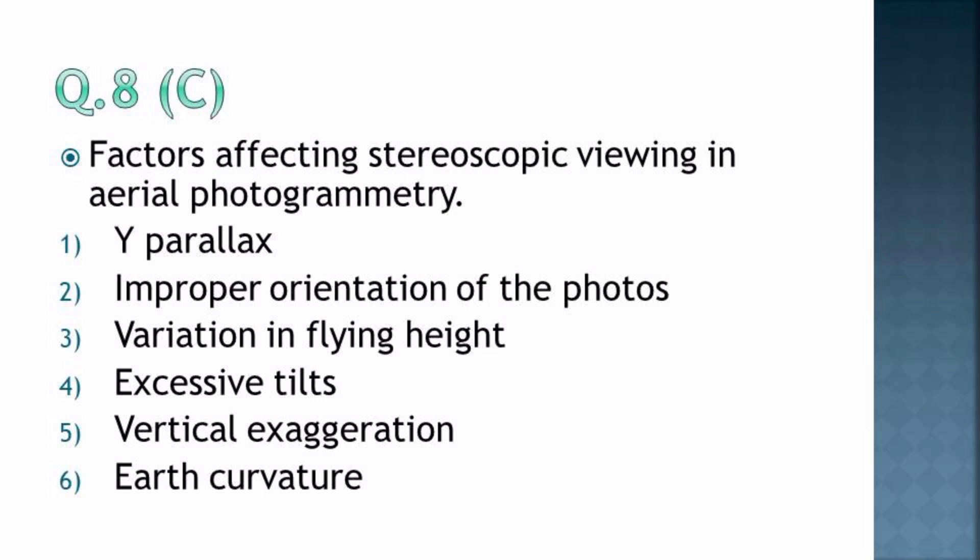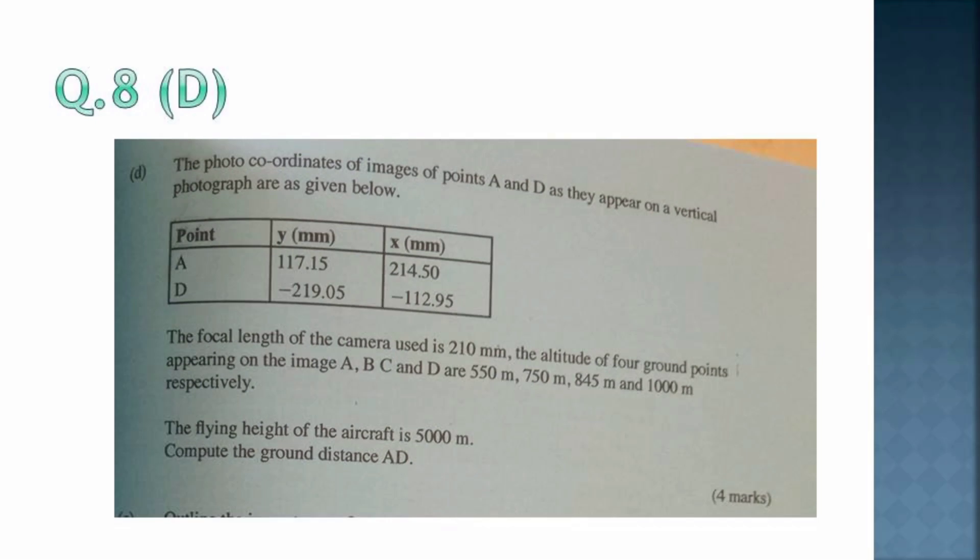Here we have question D, a calculation question worth four marks. According to me, those four marks were a little bit little because this question needed much concentration. We could put maybe 10 marks or 15, something like that. The photograph coordinates of images of points A and D as they appear on a vertical photograph are given below in a table.